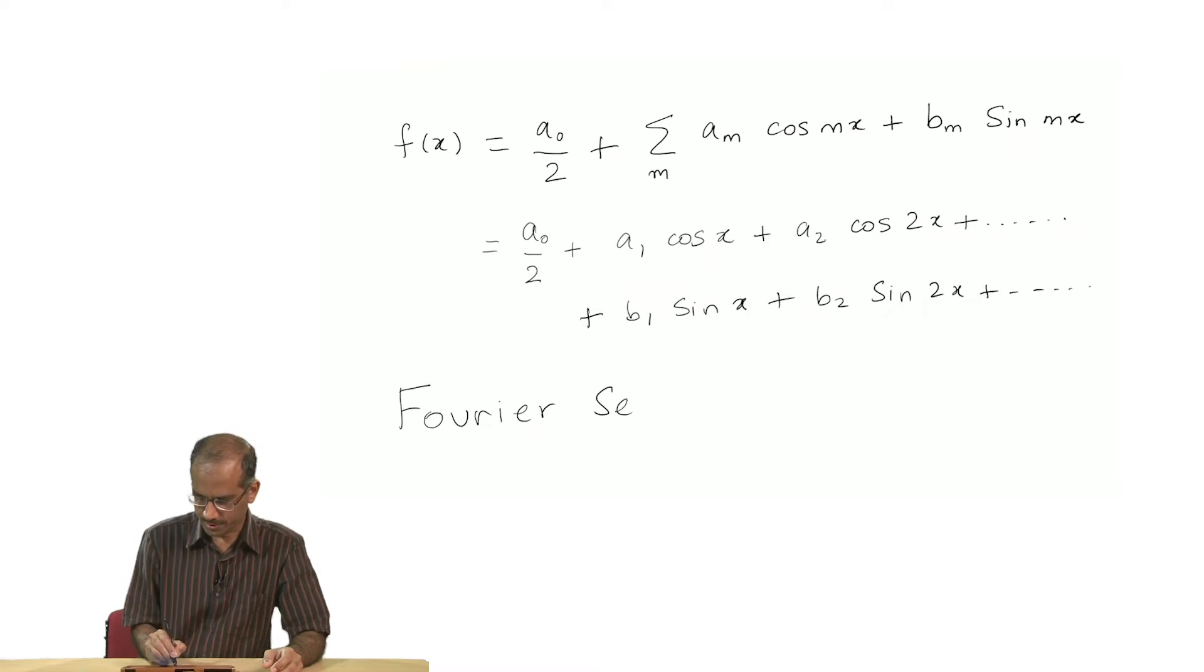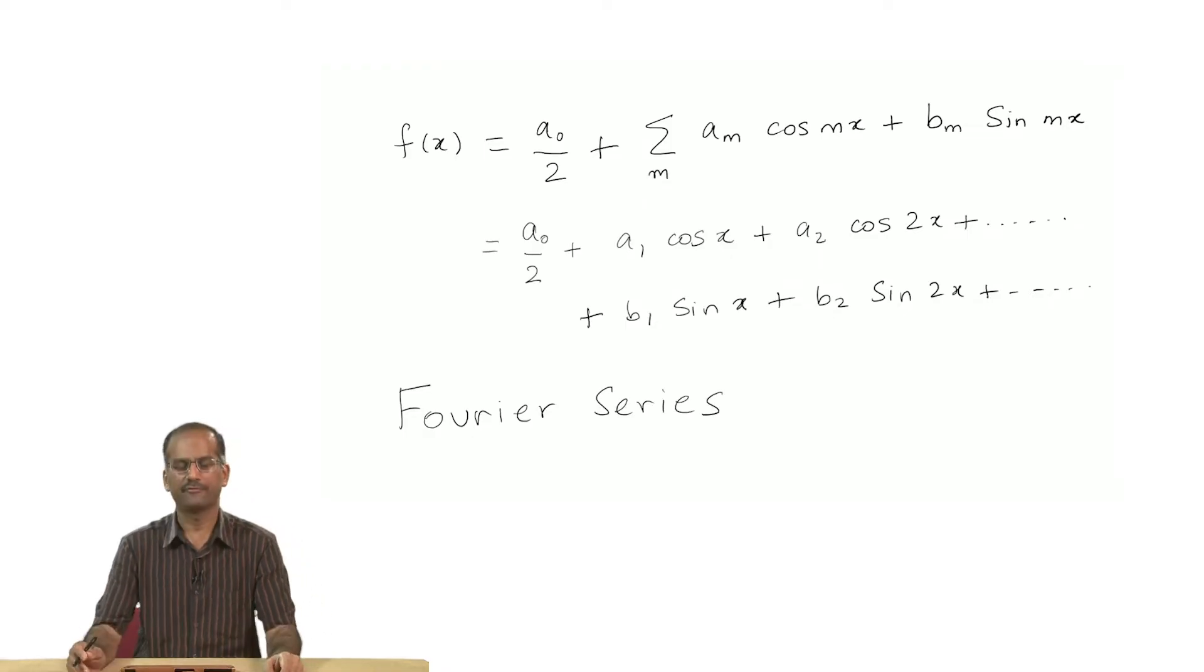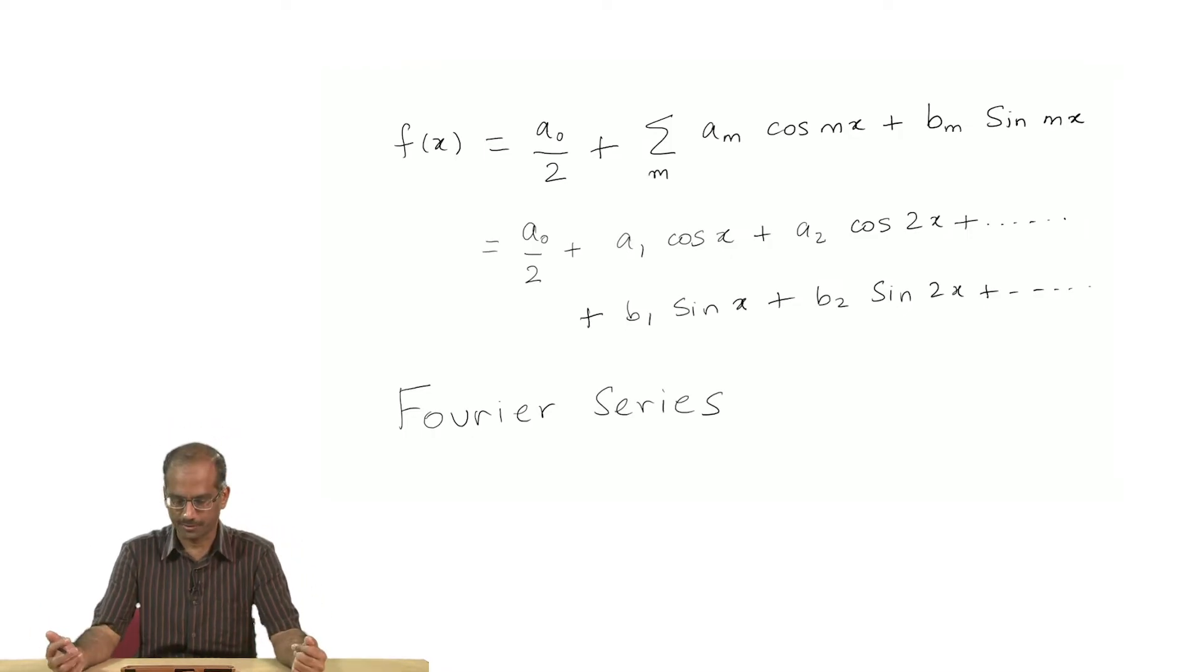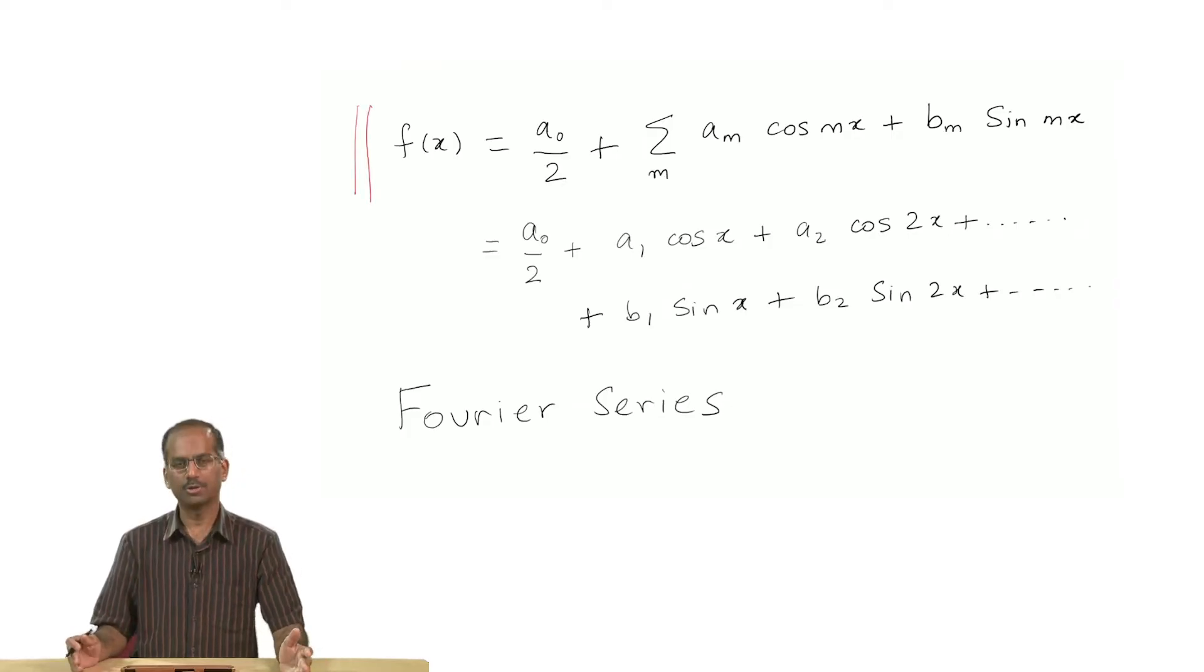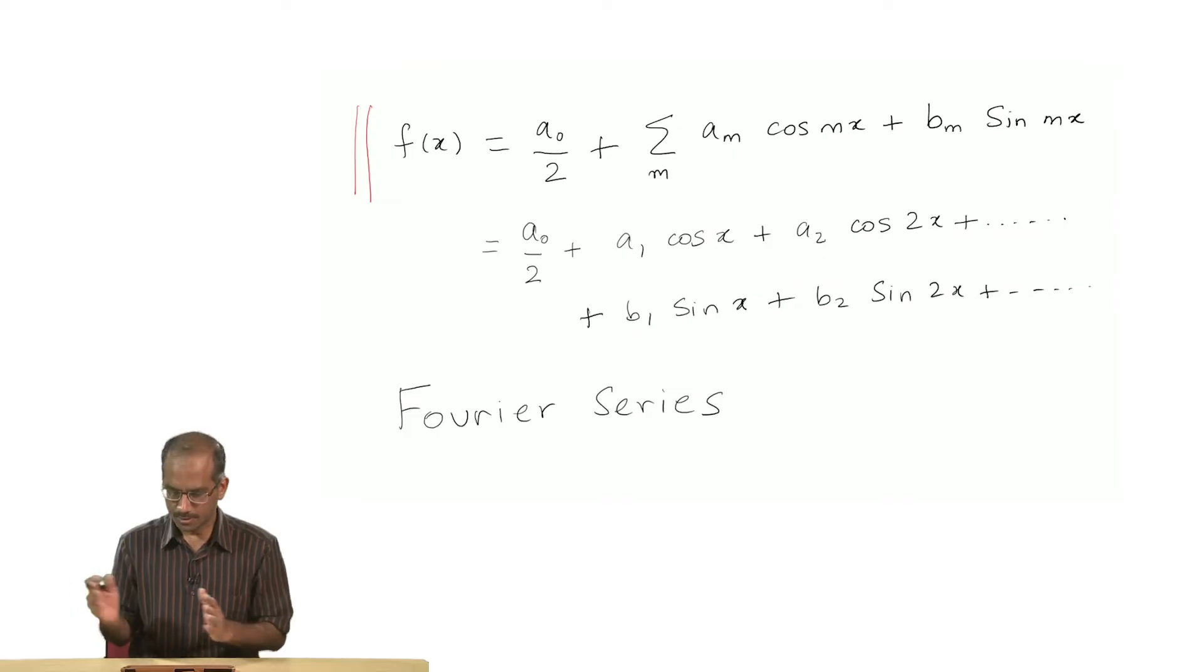This is the Fourier series and f of x is our arbitrary function. As you would remember, a₀ by 2 represents the average of the function and the other terms, the cosine and sine terms, capture the oscillation about that average value.